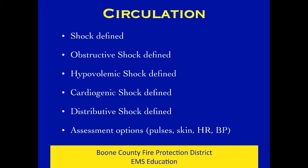In the circulation discussion, we'll talk about shock and define it. Shock is inadequate tissue perfusion - inadequate delivery of oxygen to the cellular level. There are basically four categories of shock: obstructive, hypovolemic, cardiogenic, and distributive. Obstructive shock is an obstruction to flow somewhere in the cardiovascular system - tension pneumothorax would be an example, cardiac tamponade would be another. Tension pneumo is one we'll talk about a lot in Lab A.